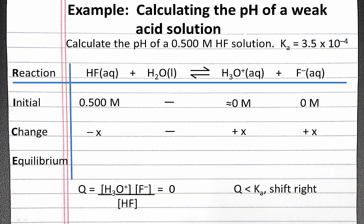So we can fill in our change in equilibrium according to the coefficients of our balanced chemical equation. To fill in the equilibrium row, we add the initial and the change rows.